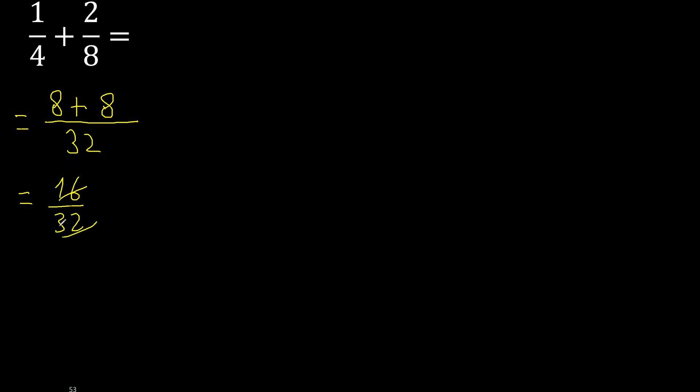Can be simplified because can be divided by the same number. Divided by 2. 16 divided by 2 is 8. 32 divided by 2 is 16.